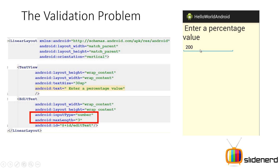I have discussed both these attributes in my previous video. You can go ahead and refer to that to see how these attributes work, but for now think about this: despite all these attempts to ensure that the user enters a proper value, the user is still entering 200. So here we are going to use a different method to validate and ensure this kind of error doesn't happen.